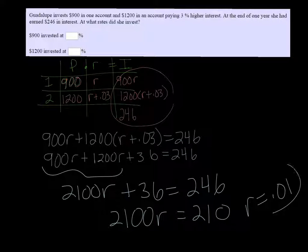So the percent of the one, we let R go to the one that she did $900 on. So the $900 one was 1% interest. And since the other one was 3% higher, that would be 4% higher, or 4%. So 1% and 4%.